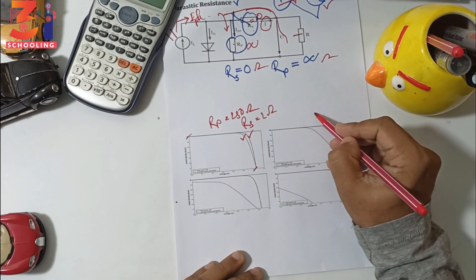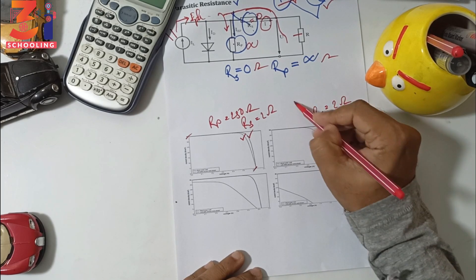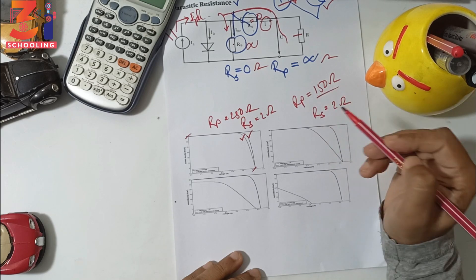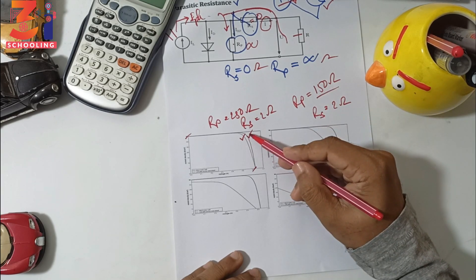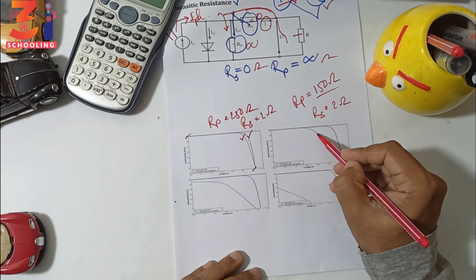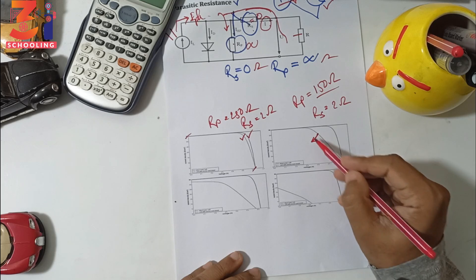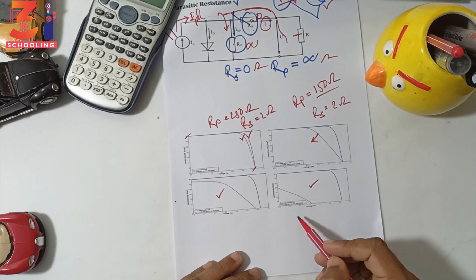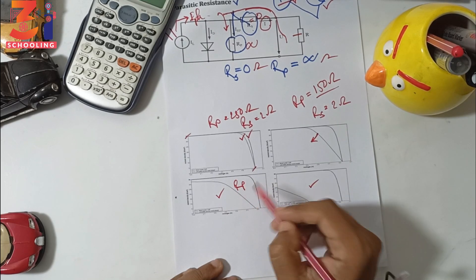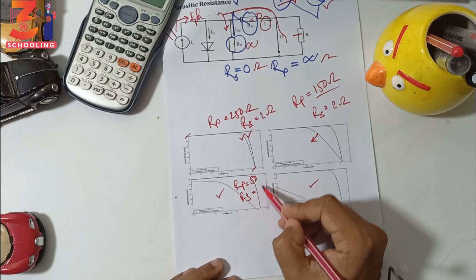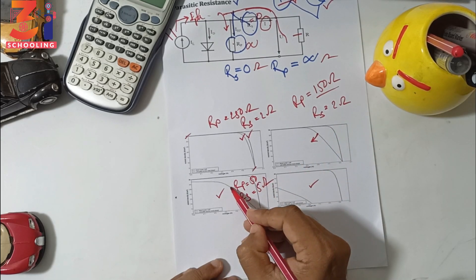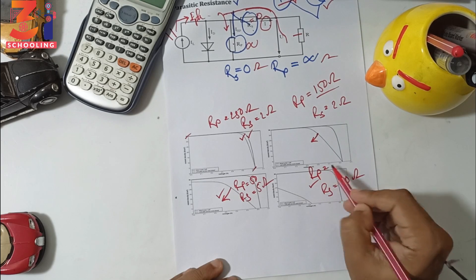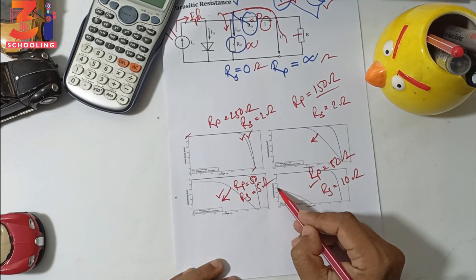If we set Rs to 2 ohms and Rp to 500 ohms as a rough example, the I-V characteristics will show the Voc and Isc. But if Rs is increased — say to 10 ohms — and Rp is decreased to 5 ohms, then the maximum power, efficiency, and fill factor all decrease significantly compared to the ideal case.